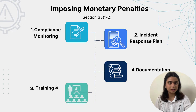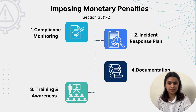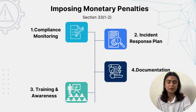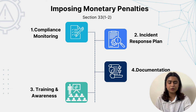Coming to Section 33, Subsection 1 and 2 — Imposing Monetary Penalties. The first action step is to have a compliance monitoring system, where we need to implement a robust system to detect and prevent breaches, ensuring ongoing compliance. For example, IBM employs advanced monitoring systems to track data handling practices and detect anomalies, reducing the likelihood of breaches. We need to implement this in an organization for identifying and mitigating risk, thus minimizing potential breaches.